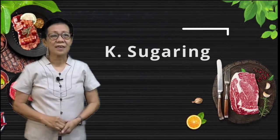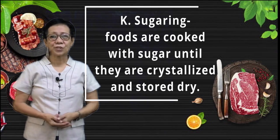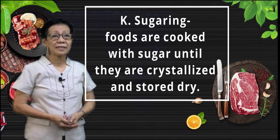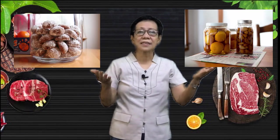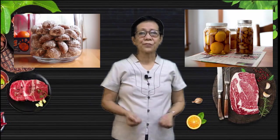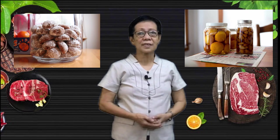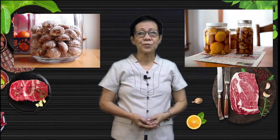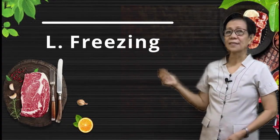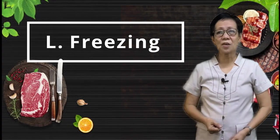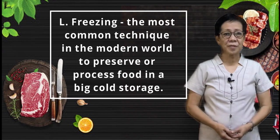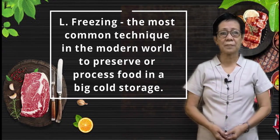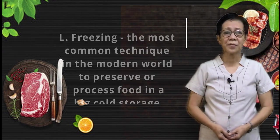Letter K: Sugaring. Foods are cooked with sugar until they are crystallized and stored dry. Here are examples of food or products produced through sugaring. Letter L: Freezing — the most common technique in the modern world to preserve processed food in a big cold storage.